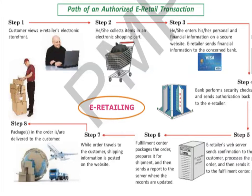This chart explains the path of an authorized e-retail transaction. Step one: the customer views the e-retailer's electronic storefront. Step two: he or she collects items in an electronic shopping cart. Step three: he or she enters personal and financial information on a secure website. The e-retailer then sends the financial information to the concerned bank.